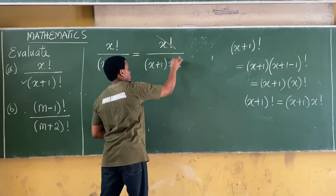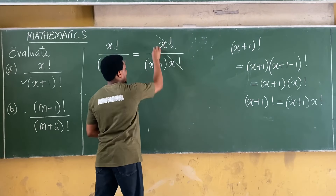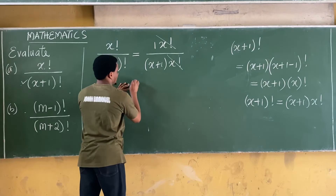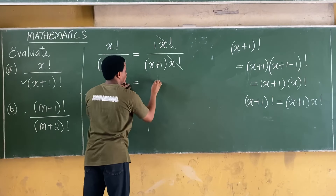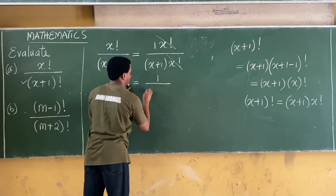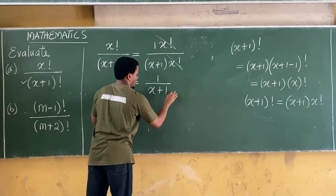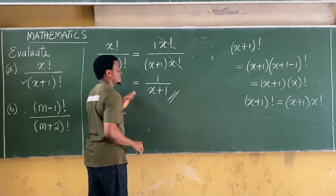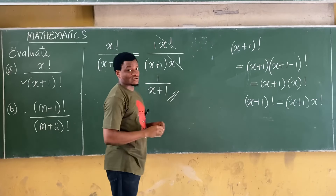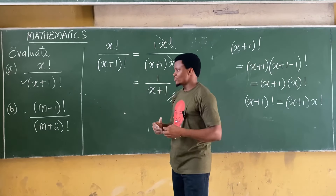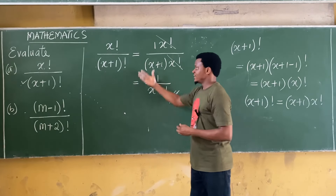The x! in the numerator cancels with the x! in the denominator, leaving 1 over (x+1). So the answer to this question is 1/(x+1).